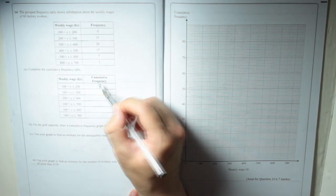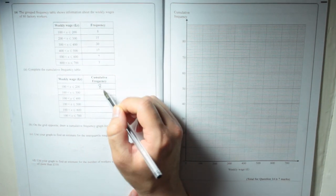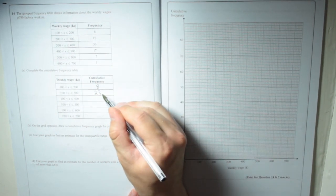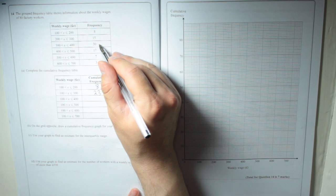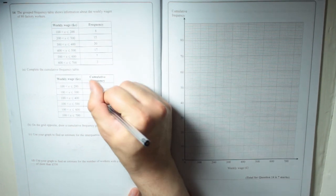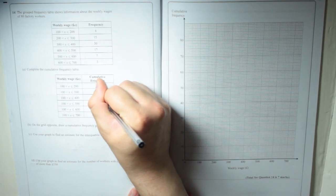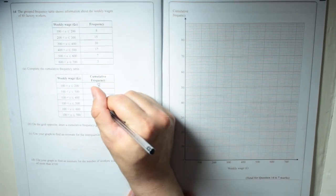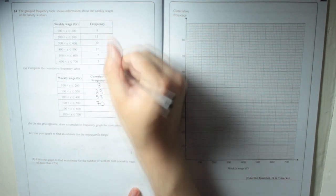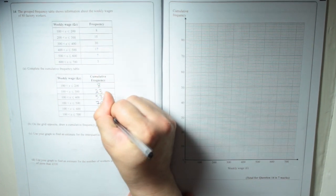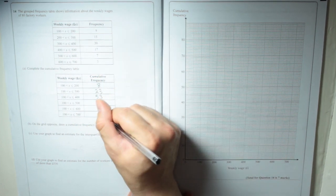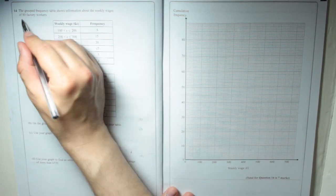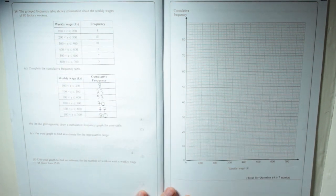Now the next one is going to be 8 plus 15 which is 23. And then it's the 23 plus the next one so that's adding on the 30 which is 53. Then you need to add on the 17 which is 70. Add on the 7, 77. And add on the 3, that is 80. So obviously it finishes with the total. 80 factory workers as it says at the start of the question.